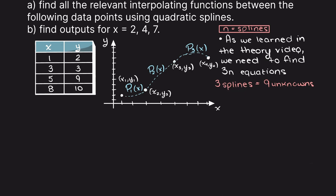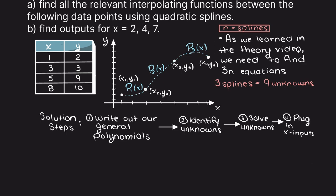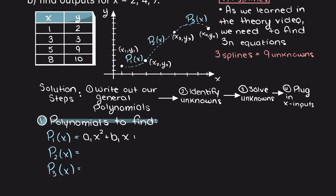Before solving, here is our plan: first, write out our quadratic functions for all three interpolating polynomials. Second, identify our nine unknowns within those functions. Third, develop a system of equations and solve for all unknowns. Lastly, plug in our desired x inputs. Let's begin — using quadratic interpolation, each of these equations is simply a second order polynomial. Our second step is to identify our nine unknowns, which are simply all the coefficients.